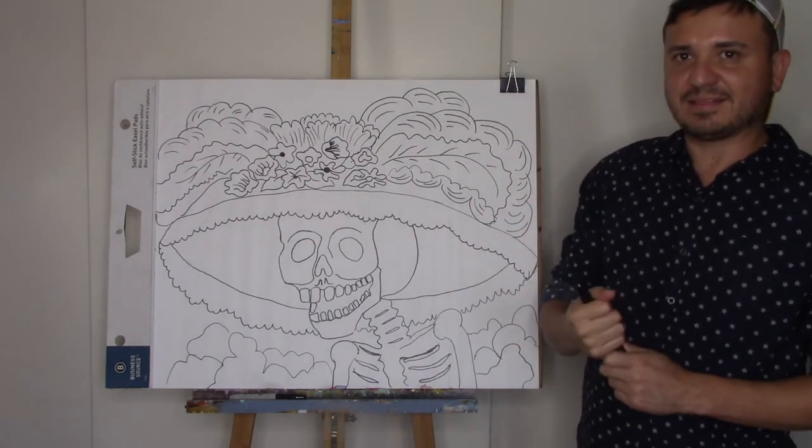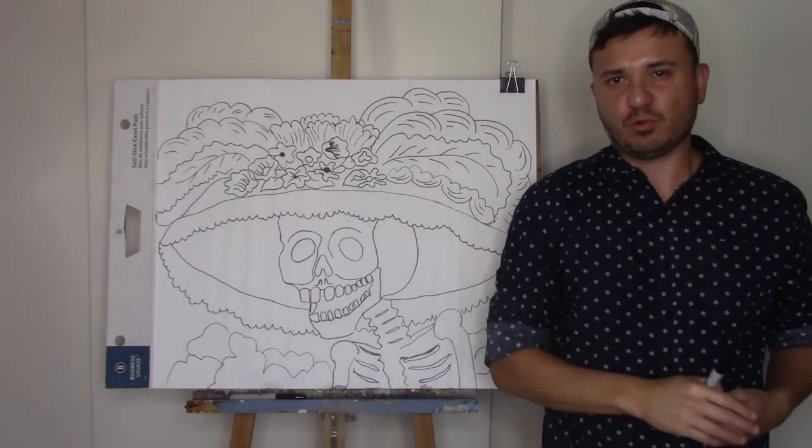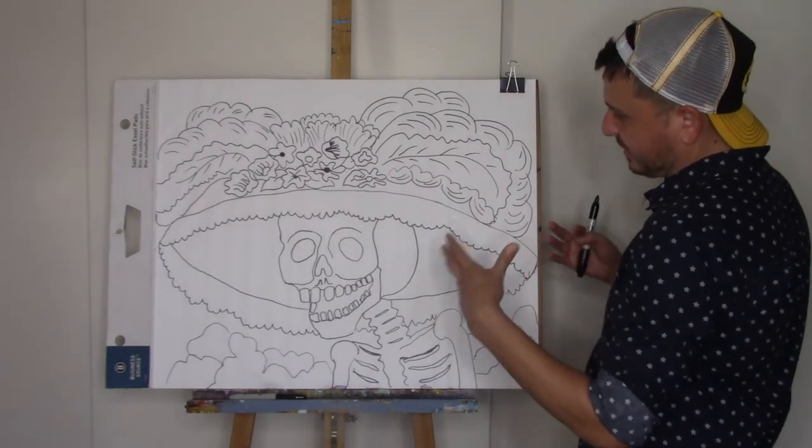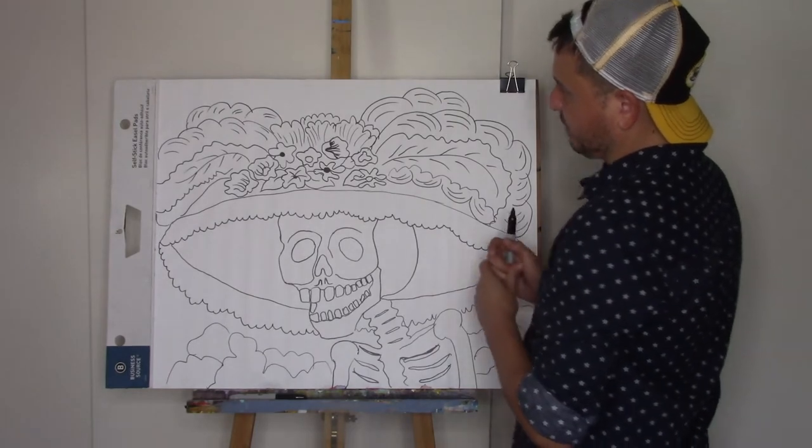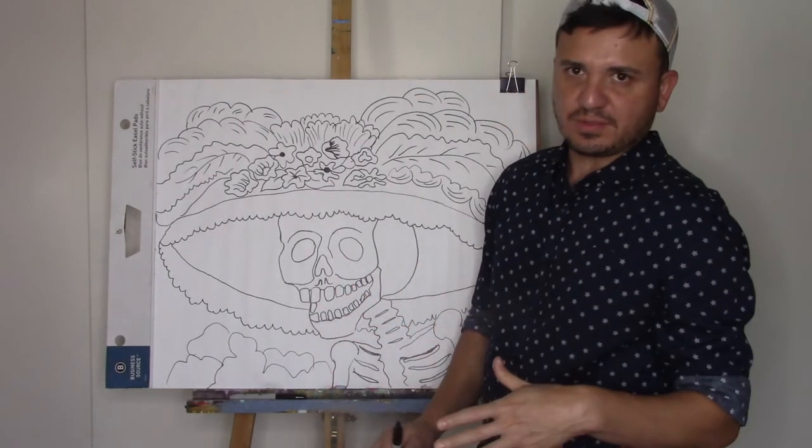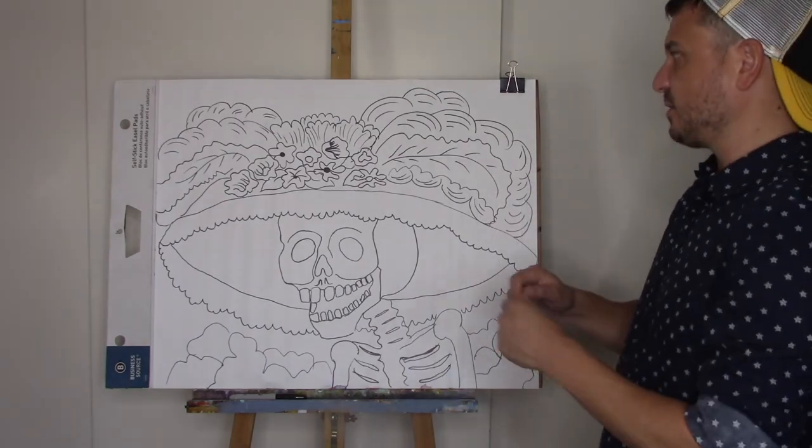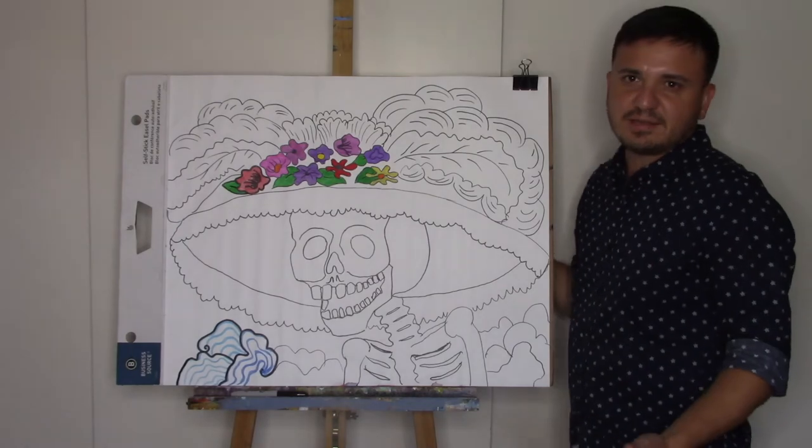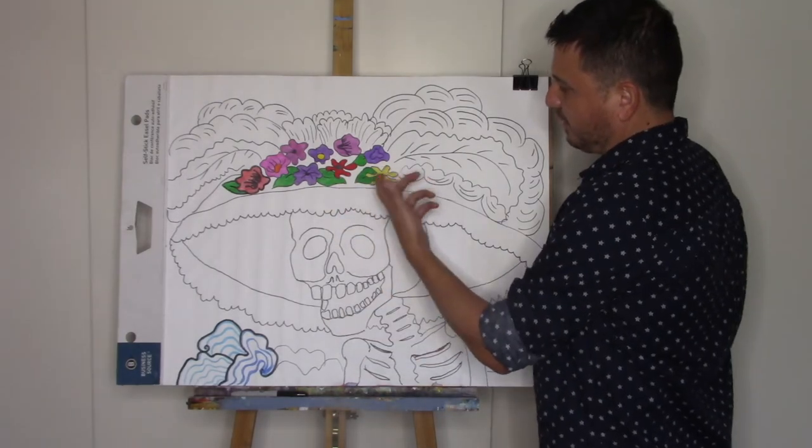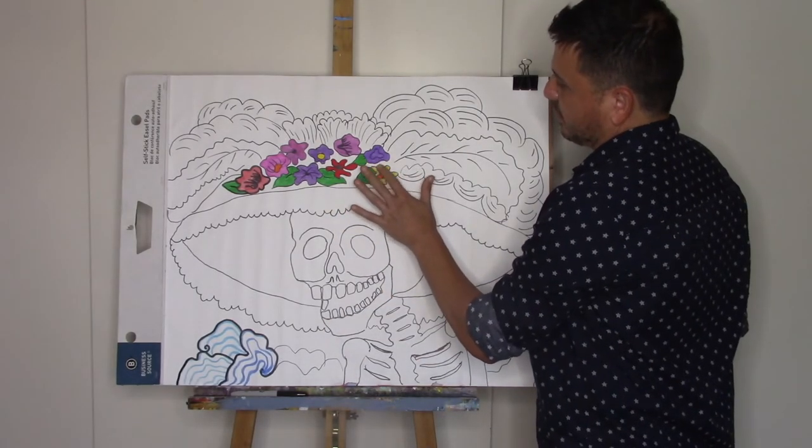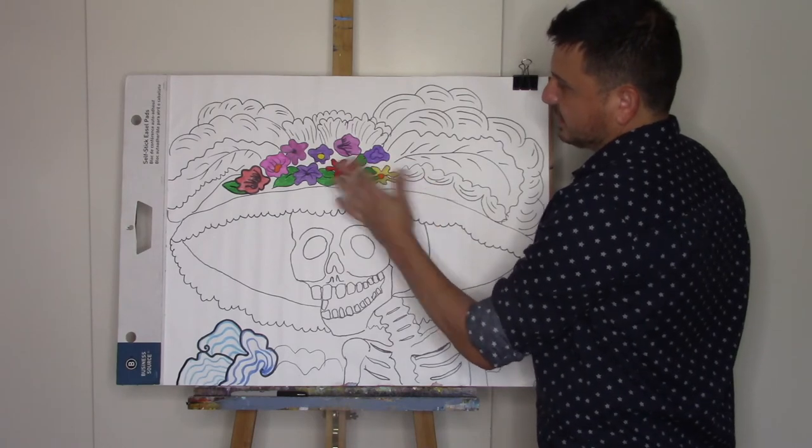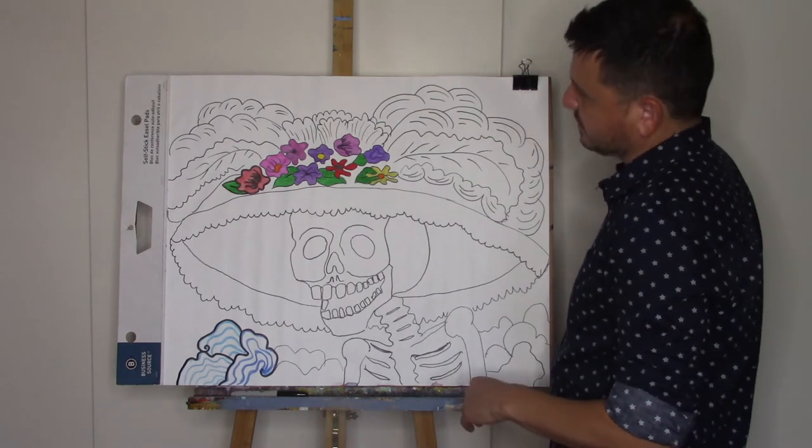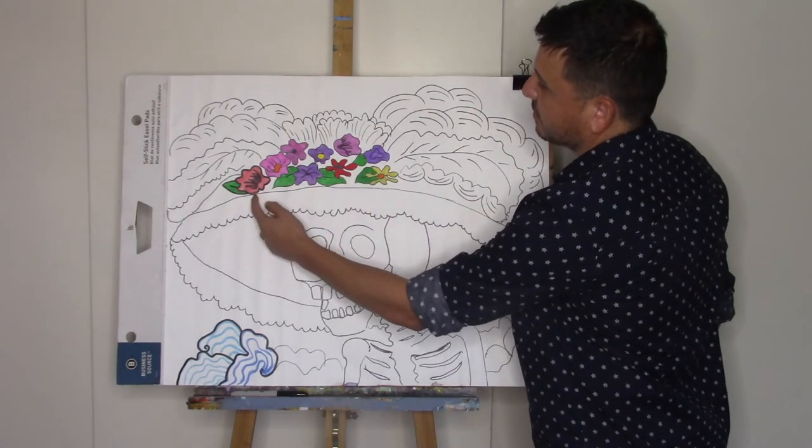There we have La Katrina by Jose Guadalupe Posada. Now I'm going to color it. I'm going to start adding color just to see what it would look like. I think I'm going to go with the flowers and I think I'm going to go with yellow to start off. Okay, so the idea was to go with yellow but it doesn't play well with the marker black and bleed. I knew that, I don't know why I didn't think about that.